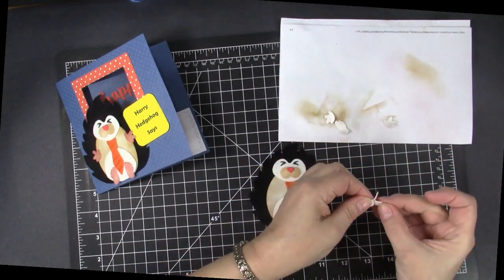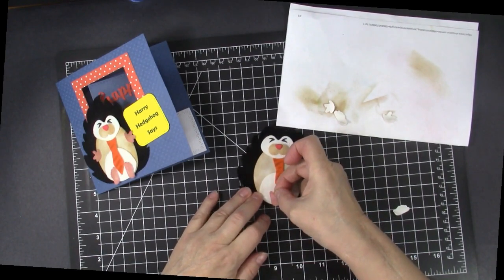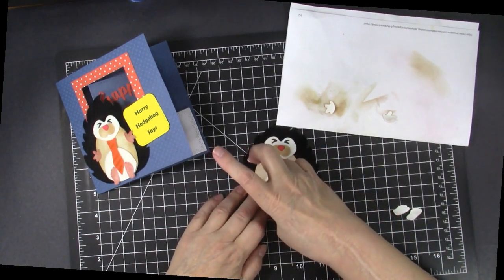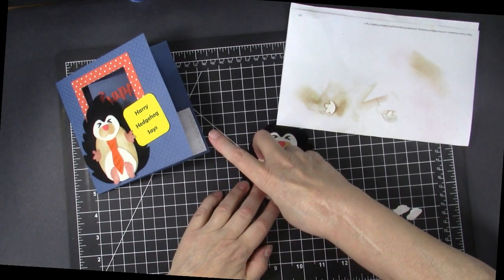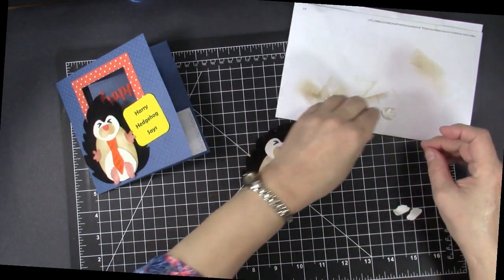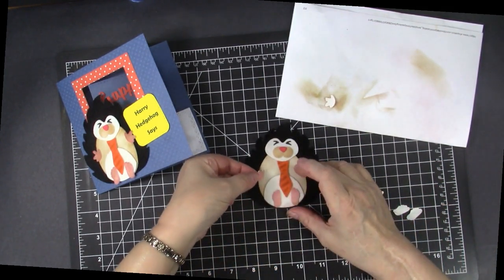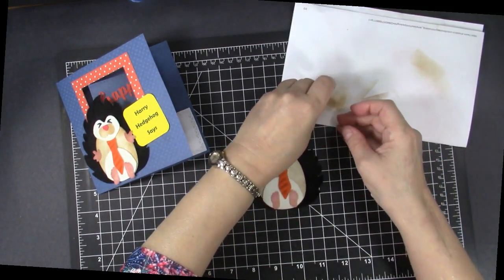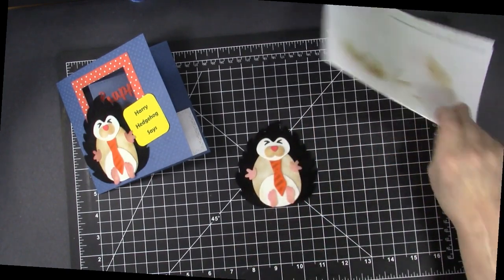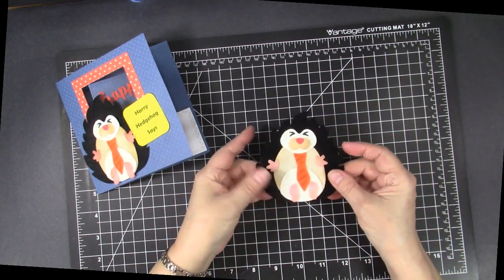And then we have his cute little feet which I sponged with like a light brown and then a pink. And this guy goes over here. Well, maybe not. I think this one is supposed to be over here. And there's his little feet sticking out. And then we have a couple hands, paws. And our cute hairy hedgehog is done and ready to be placed on the card.